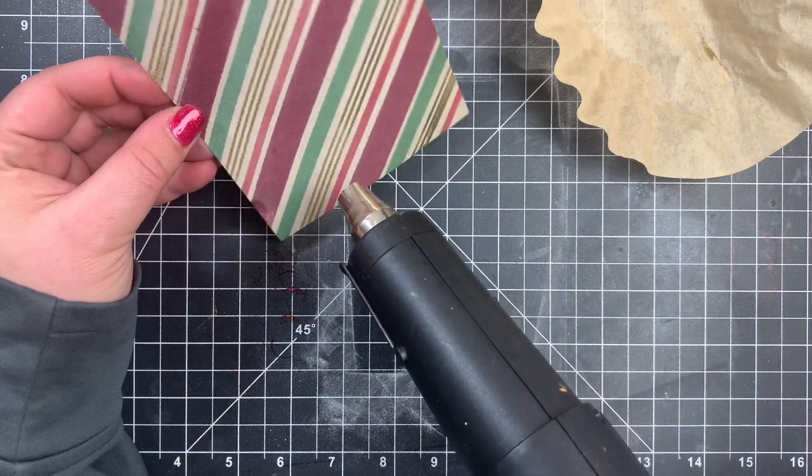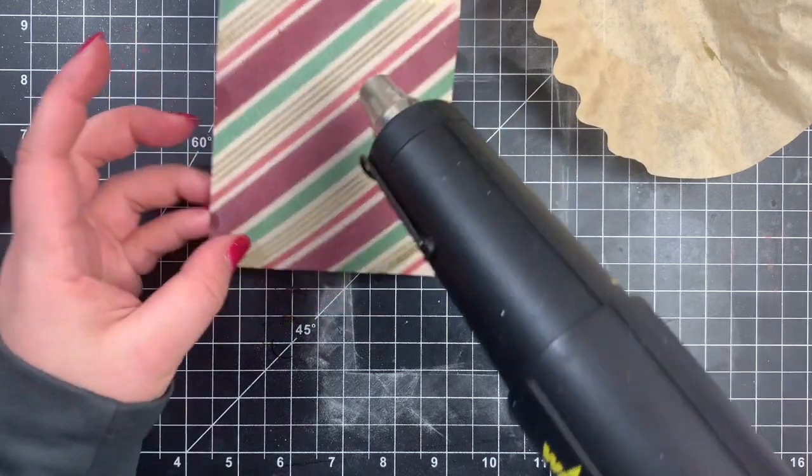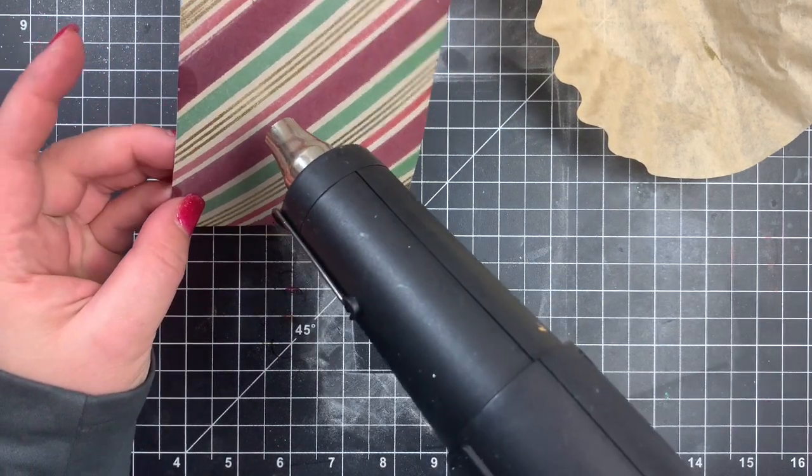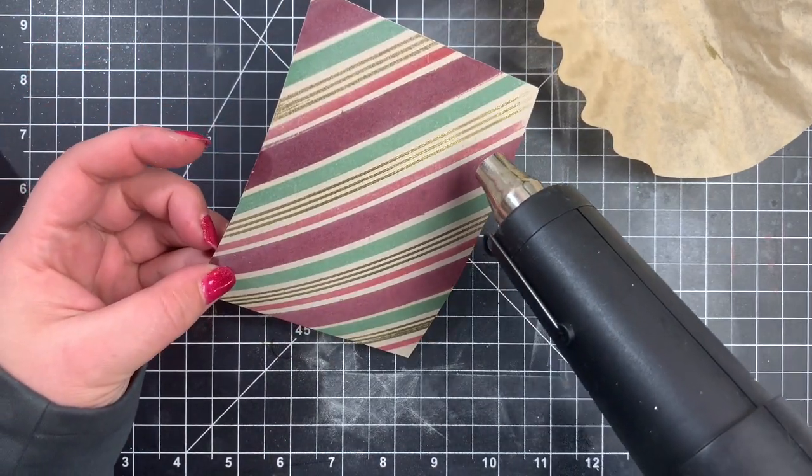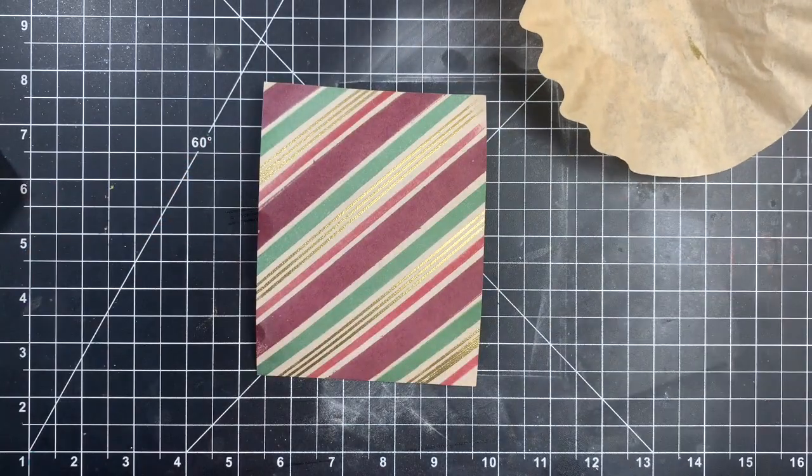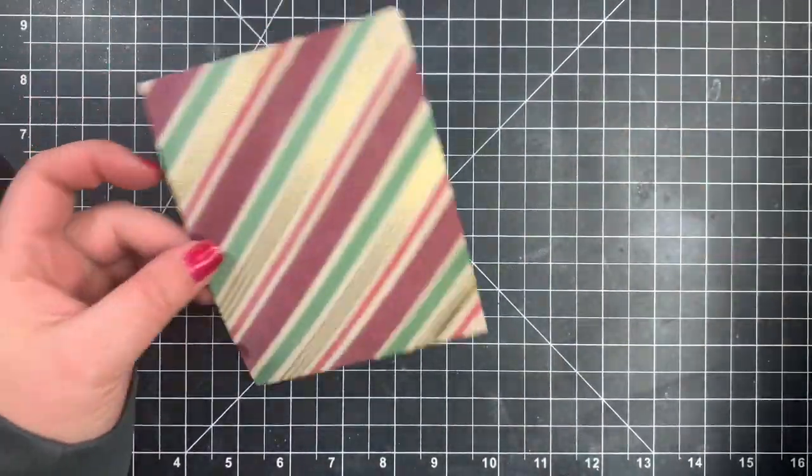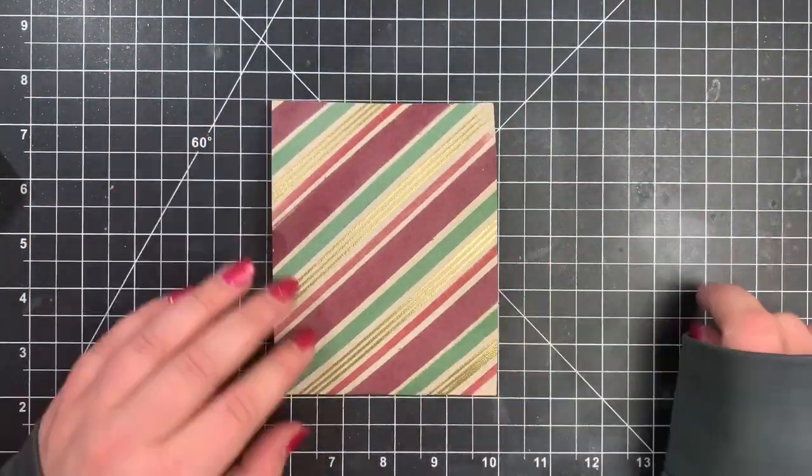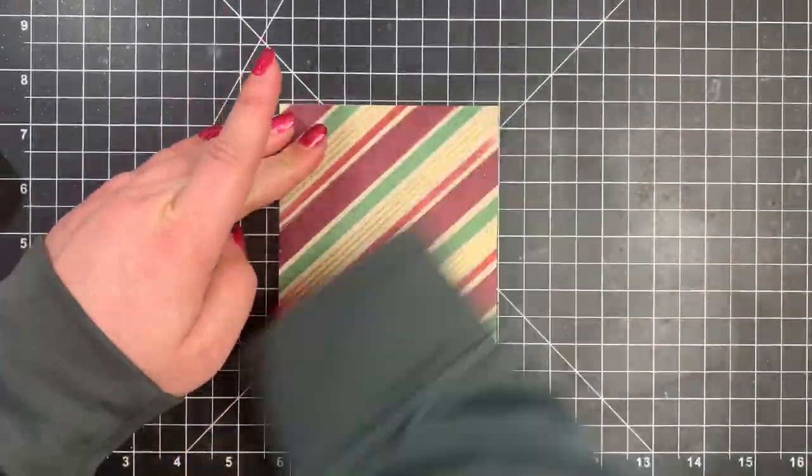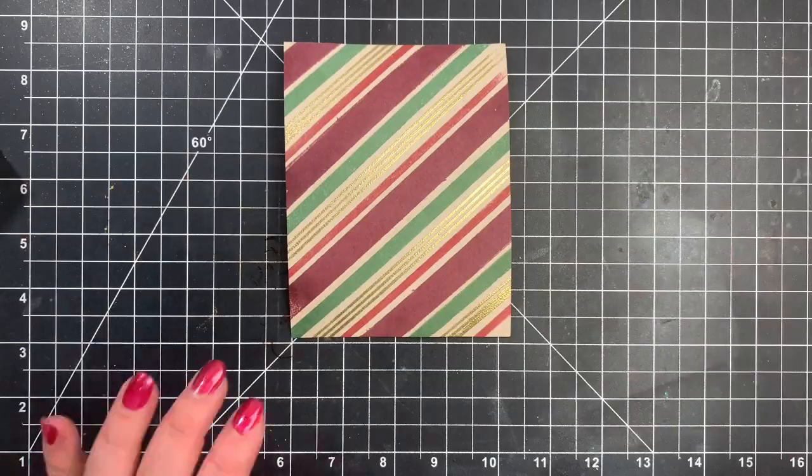So again, I waited till my heat gun was heated up for about 30 seconds or so. And then I can go ahead and heat set all of my little stripes. Not too worried about the edges where it didn't really stamp, where the stamp was hanging over my acrylic block. Because once again, I am going to trim this down. And I trim this down, I think about a quarter of an inch again, if I'm not mistaken, but I honestly can't remember. But it is about a quarter of an inch.